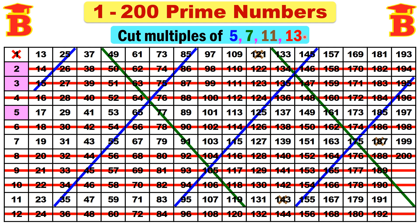And finally, for the number 13, there is only one number divisible by 13 here, and that is 169. We can remember this very easily because 13 × 13 = 169. Now we have cancelled the numbers divisible by 5, 7, 11, and 13.